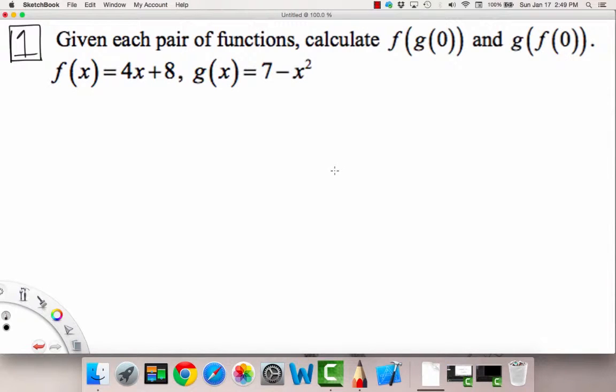Problem number one tells us given each pair of functions, calculate f of g of 0 and g of f of 0. Let's start with the first one. We're going to do f of g of 0.